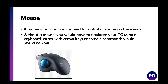Without a mouse you'd have to use your arrow keys to navigate your computer. In old Windows XP, if your mouse didn't work, you could set it to use the arrow keys, which was really slow. Or you'd have to use the command prompt and type in commands, which would take a long time and be a lot more difficult.